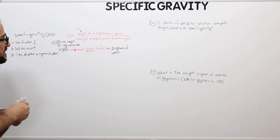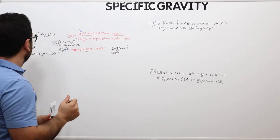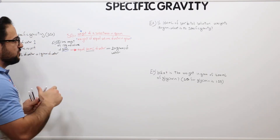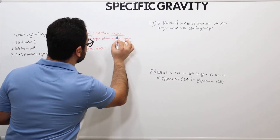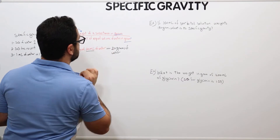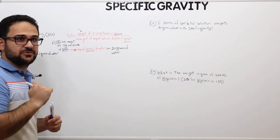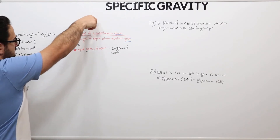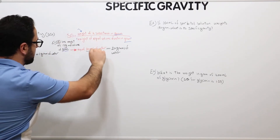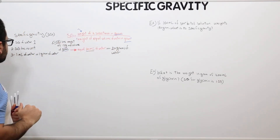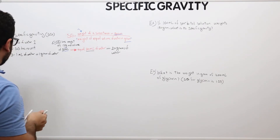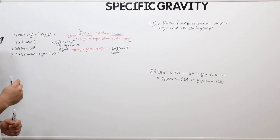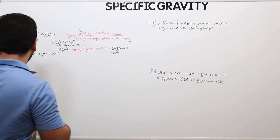This is the reason why specific gravity is unitless — because grams in the numerator and grams in the denominator cancel each other out. The third, fourth, and fifth things I want you to keep in mind are these.